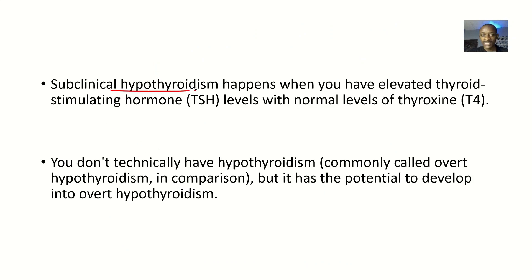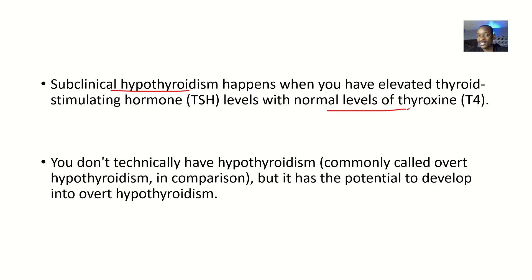In subclinical hypothyroidism, it happens when you have elevated levels of TSH — the thyroid stimulating hormone — but you are having a normal level of T4. Normally, if thyroid stimulating hormone levels are up, the T4 should be low, because the thyroid stimulating hormone is what is used to form T4.